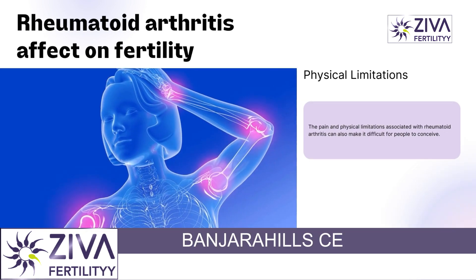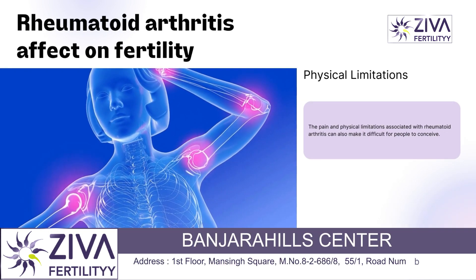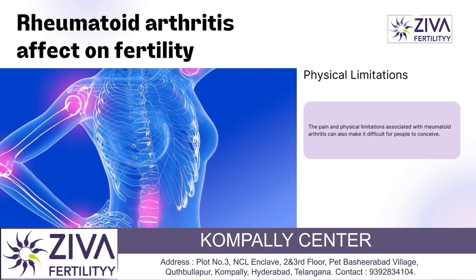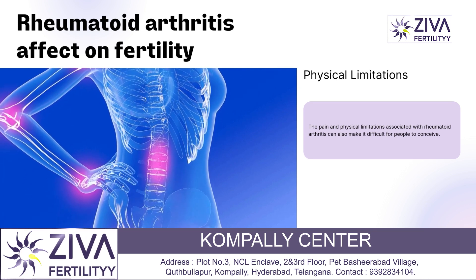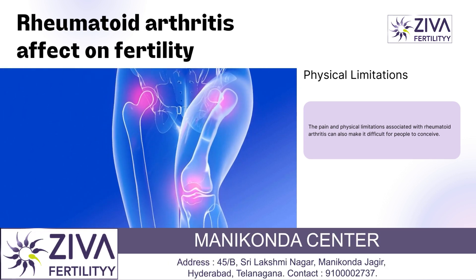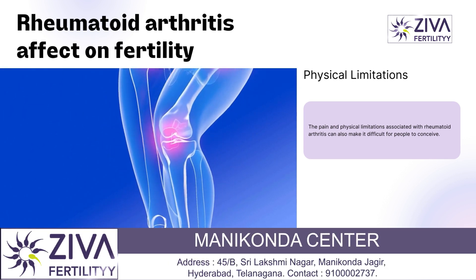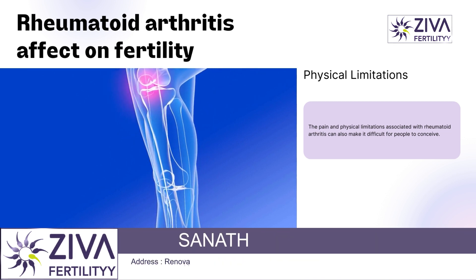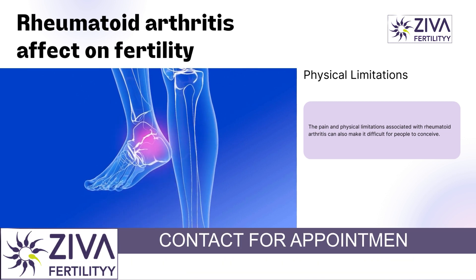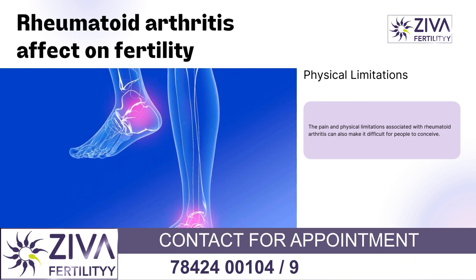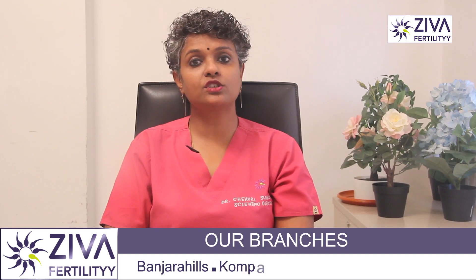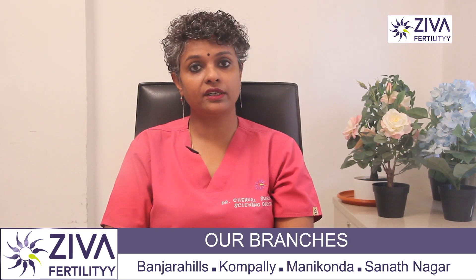Then there are physical limitations. The pain and physical limitations associated with rheumatoid arthritis can also make it difficult for people to conceive. Painful joints and fatigue can make sexual intercourse uncomfortable or impossible. Physical limitations can also make it difficult to maintain a healthy weight or engage in regular exercise, which can also affect fertility.